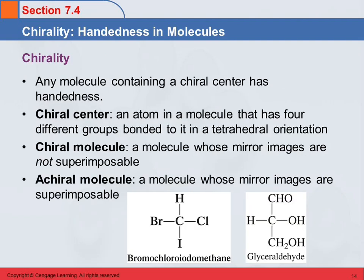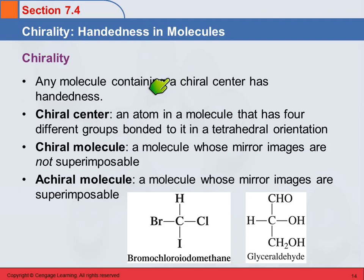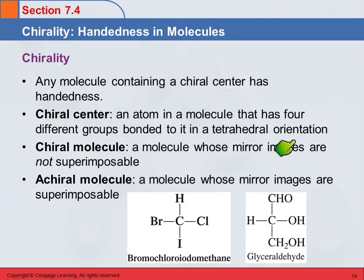We have a word for that: it's called chirality. The CH is pronounced like a K. We say that any molecule that has a chiral center has handedness. So when we're talking about handedness of molecules, we're talking about chirality. A chiral center is an atom in a molecule that has four different groups bonded to it in a tetrahedral orientation.